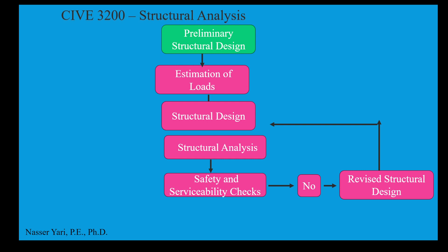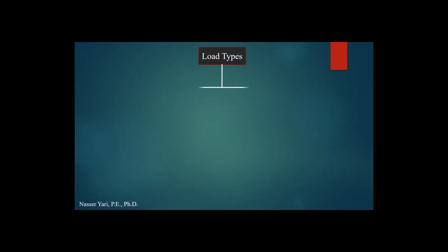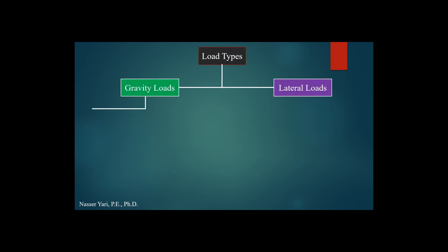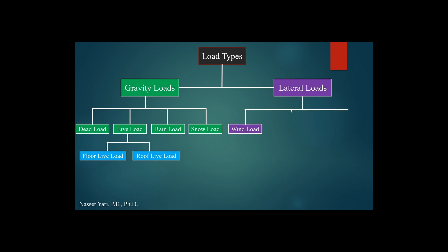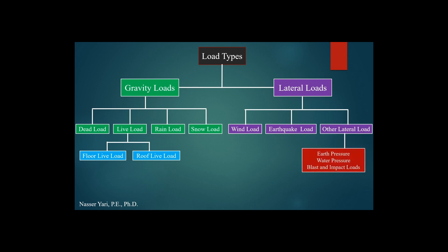Load types can be divided into vertical load and horizontal load, or gravity load and lateral load. In a gravity load it can include dead load, live load, rain load, and snow load. Live load can also include roof live load and floor live load. The lateral load includes wind load and earthquake load, and other loads such as earth pressure, water pressure, blast, and impact load.